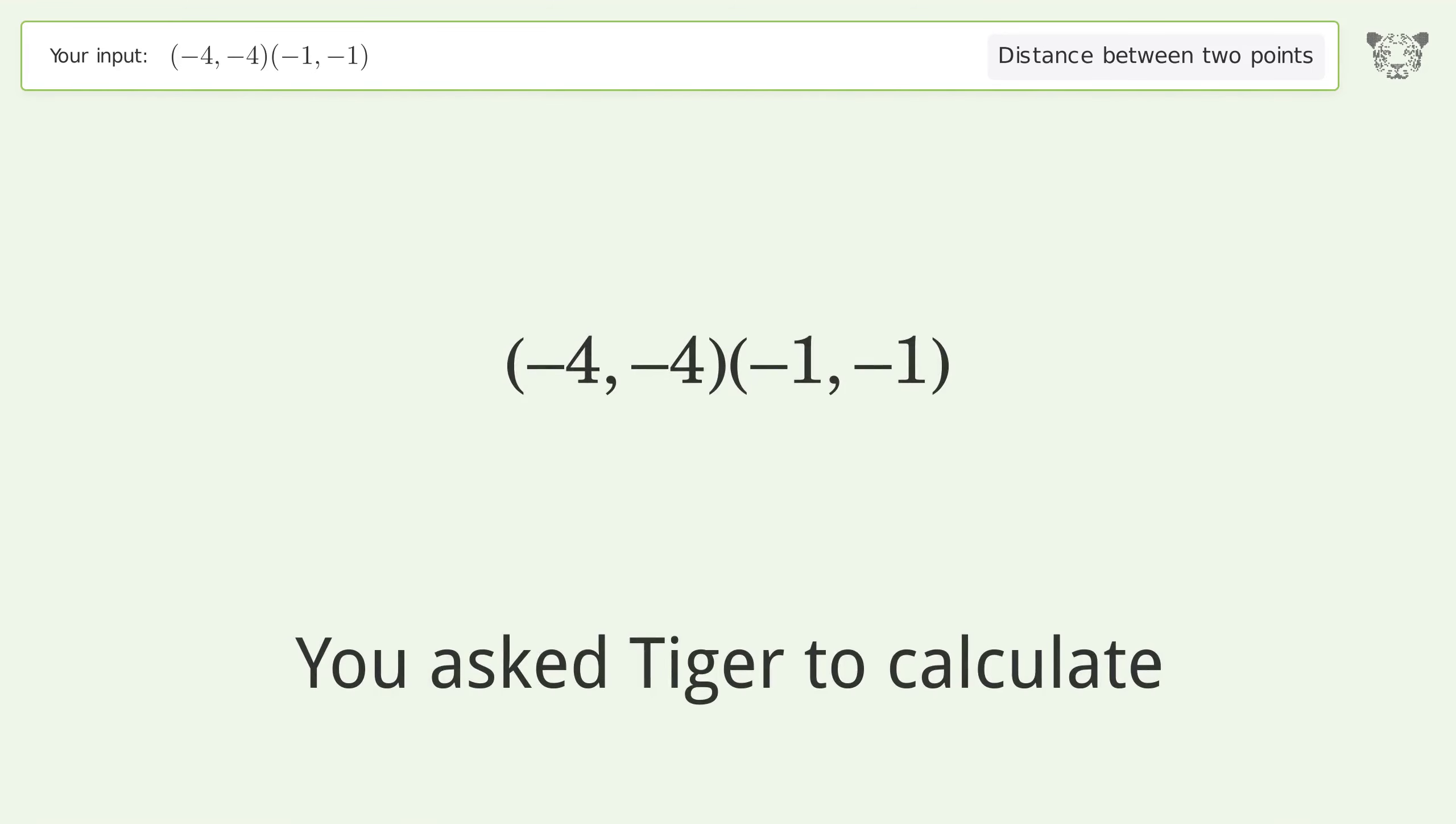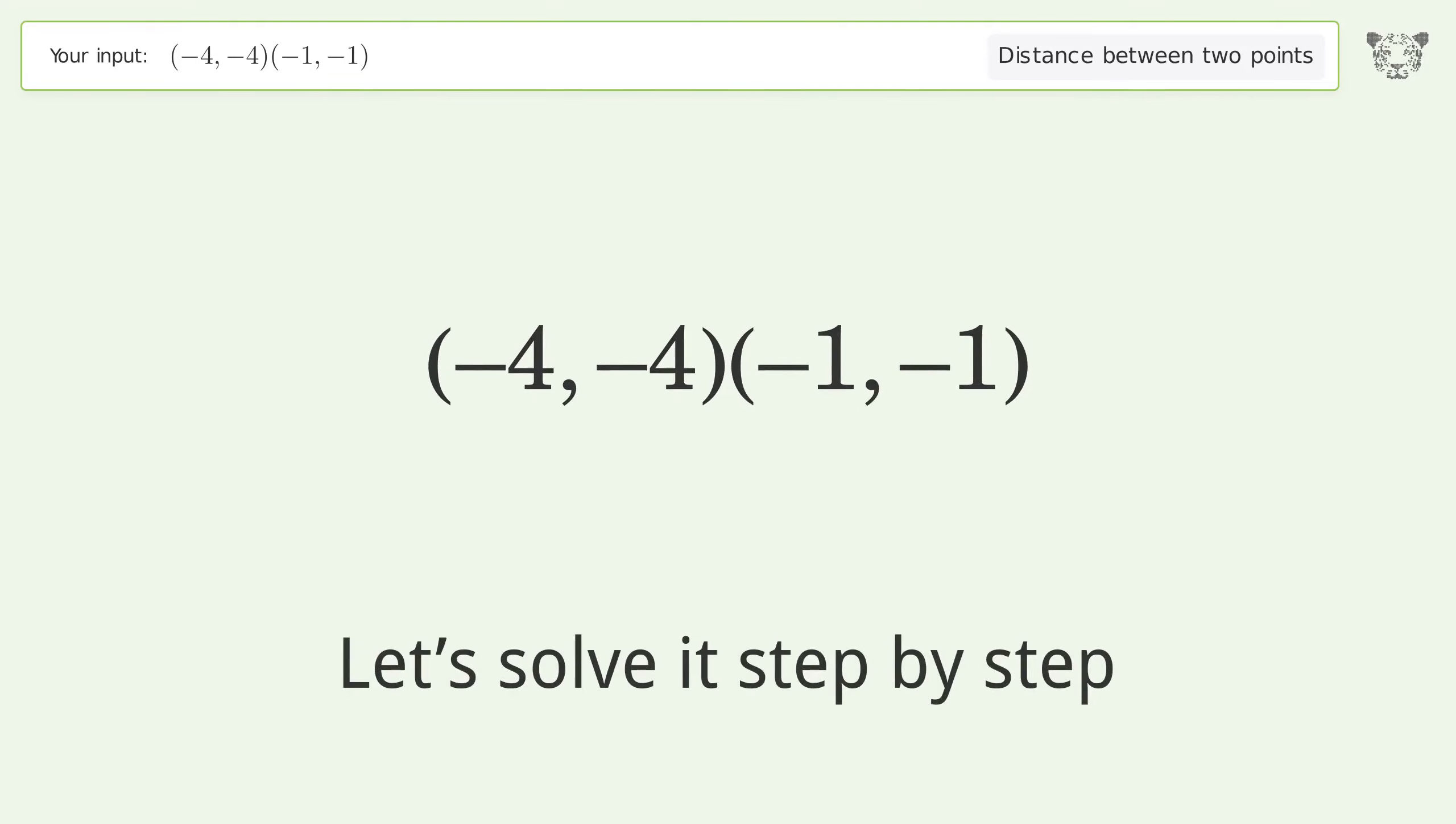You ask Tiger to calculate the distance between two points. The distance between the two points is the square root of 18 or 4.243. Let's solve it step by step.